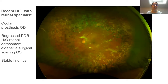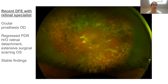She had recently had a dilated fundus exam with her retinal specialist. She has an ocular prosthesis in the right eye and in the left eye had stable regressed proliferative diabetic retinopathy after extensive PRP treatment with some residual fibrovascular material. She had a history of retinal detachment and the eye was fortunately no longer detached, though she had extensive surgical scarring in the left eye. All findings were stable, so we were free to proceed with our low vision exam.